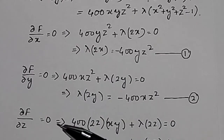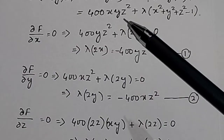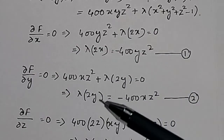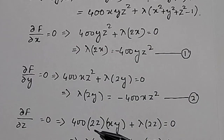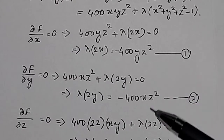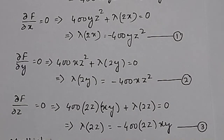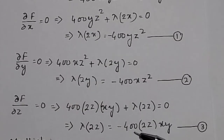Taking the partial derivative of f with respect to z and setting it to 0: the partial derivative of 400xyz² with respect to z is 400·2xyz = 800xyz, and the constraint term gives λ·2z, so: λ·2z = −800xyz. Call this Equation 3.